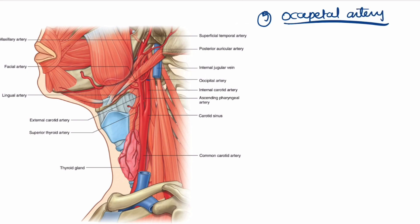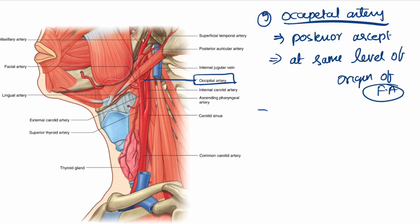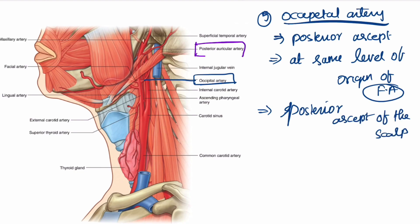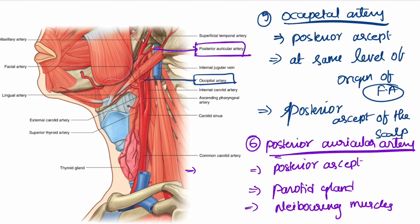The occipital artery arises from the posterior aspect at the same level as the facial artery, and it supplies the posterior aspect of the scalp. The posterior auricular artery also arises from the posterior aspect and supplies the parotid gland, some neighboring muscles, and the structures in the temporal bone, the auricle, and the skull.